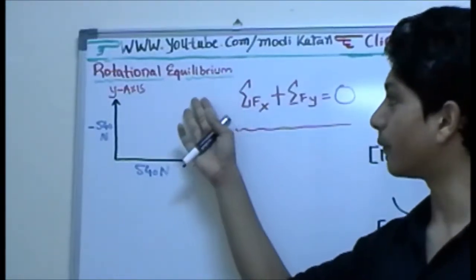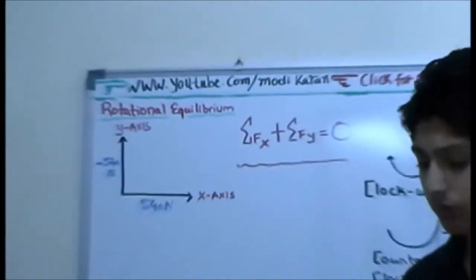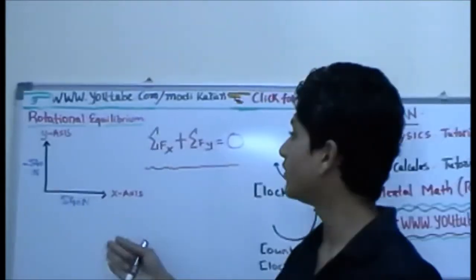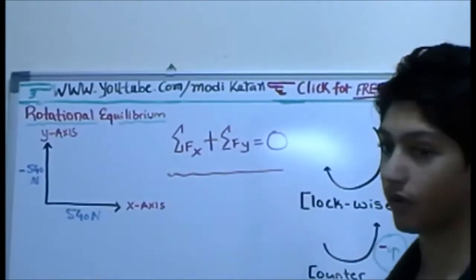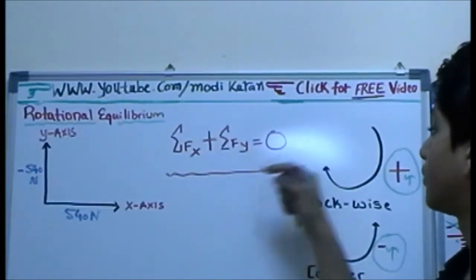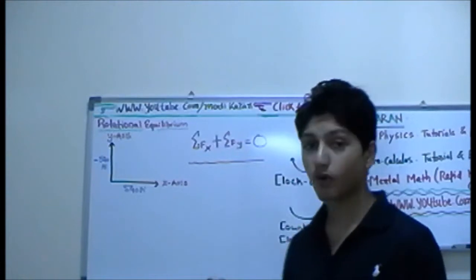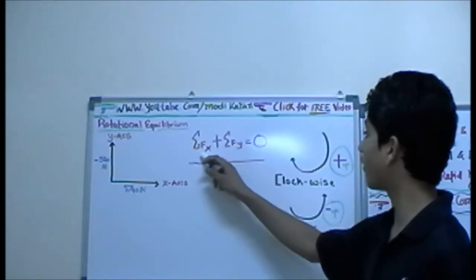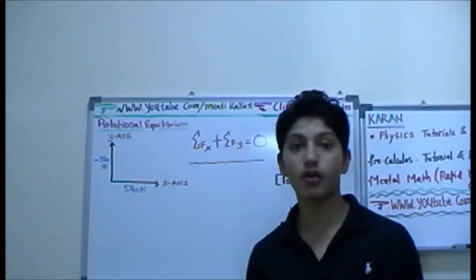Now, equilibrium. When people hear this word, they have no idea what equilibrium is. So let me tell you guys. Regular equilibrium is basically when you have an X component and a Y component. When you add the X and Y components, they become 0. So we can write this as: total force in the X component plus total force in the Y component adds up to 0. That would mean there is no rotation and the object is not moving.